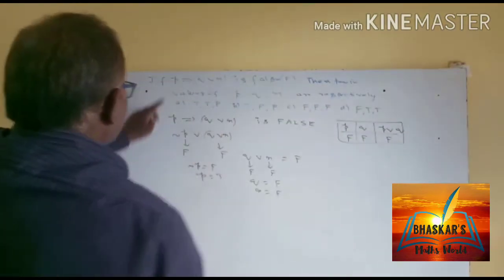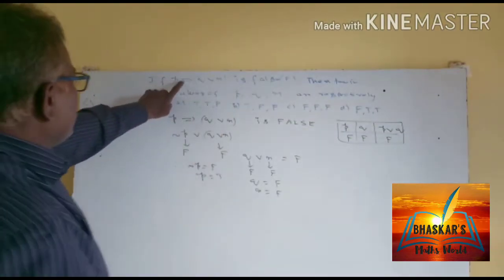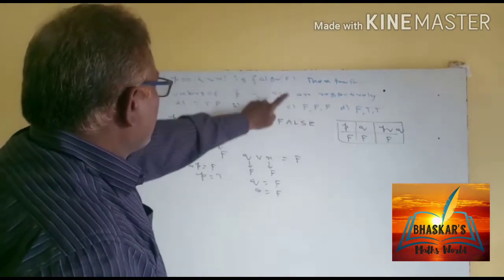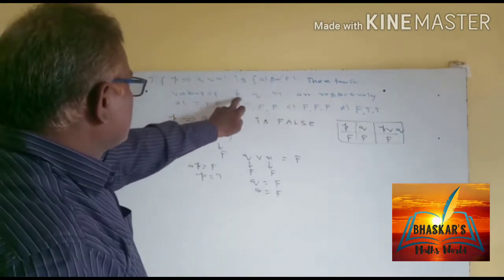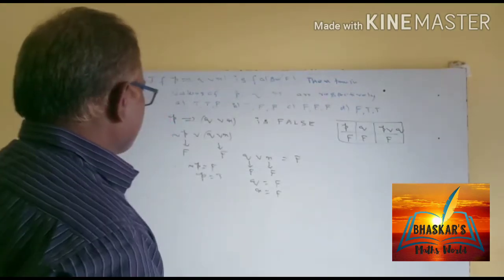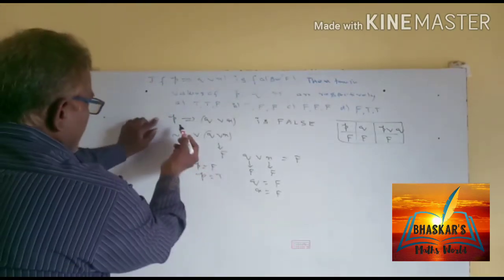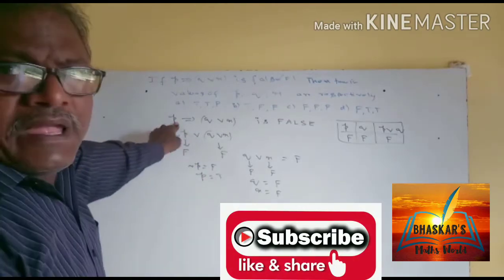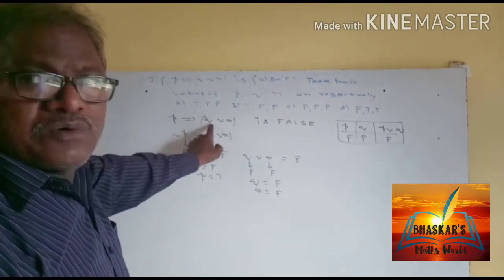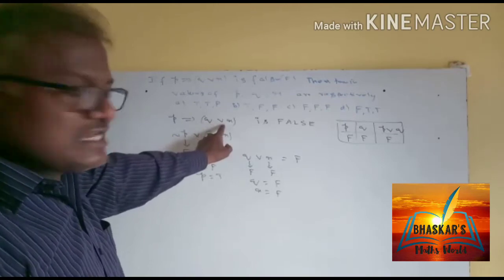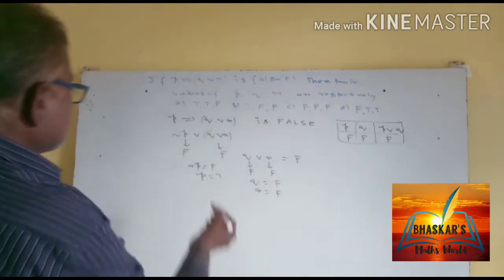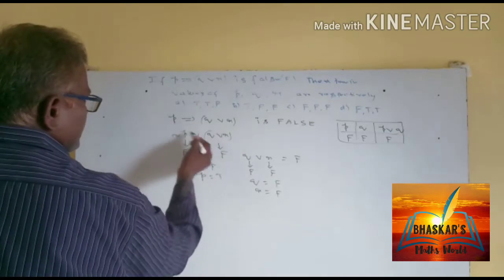Here, P implies Q disjunction R, and R is false. Then what are the truth values of P, Q, R respectively? The given statement is P implies Q disjunction R, and R is false.